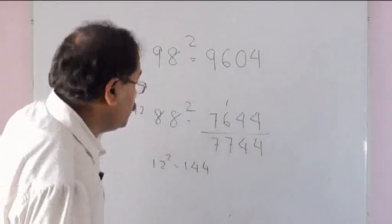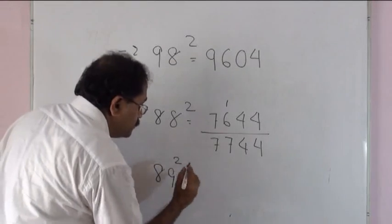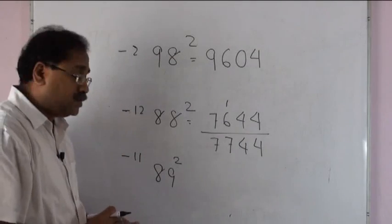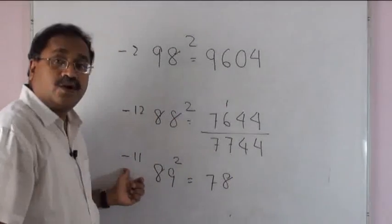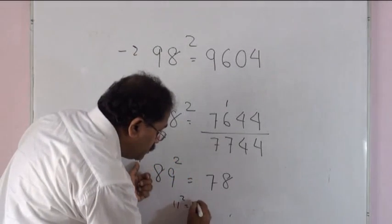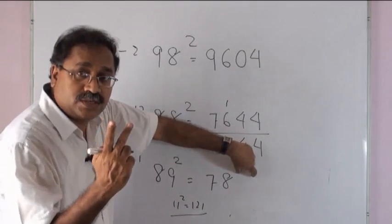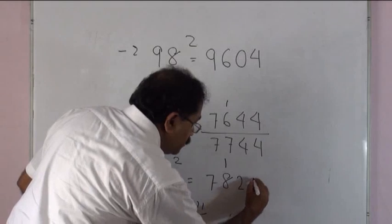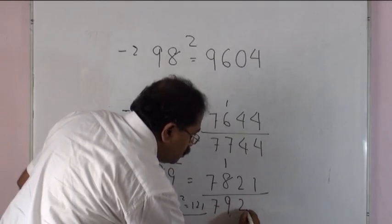Take one more example: 89 squared. This is 11 less than 100, so 89 minus 11, which is 78, followed by 11 squared, which is 121. Since 121 is a 3-digit number, the hundreds digit carries over: 78 plus 1 is 79, and 21 stays. So 89 squared equals 7921.